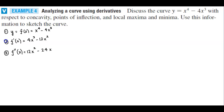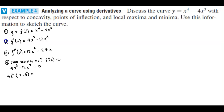The first thing we want to do is find the critical numbers. We let f prime of x equal zero. So 4x cubed minus 12x squared equals zero. We can factor out 4x squared, leaving x minus 3. So we have 4x squared equals zero or x minus 3 equals zero, giving us x equals zero or x equals 3.